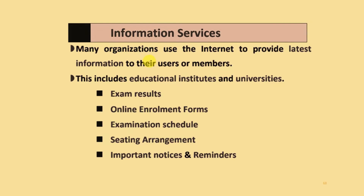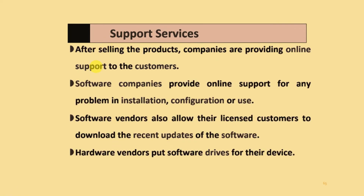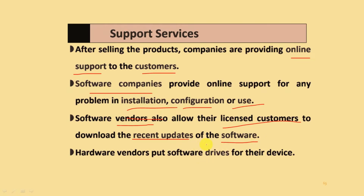Information-based services: many organizations use the internet to provide the latest information to users or members. This includes educational institutes and universities that send exam results, online enrollment forms, examination schedules, seating arrangements, important notices, and reminders. Support services: after selling products, companies provide online support to customers. Software companies provide online support for installation, configuration, or usage issues. Software vendors also allow licensed customers to download recent updates, and hardware vendors put software drivers on their websites.